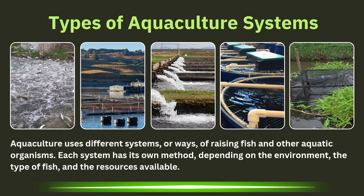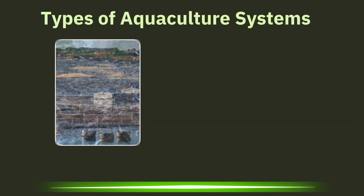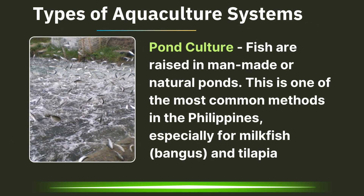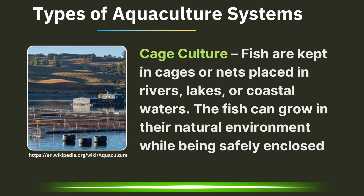The types of aquaculture systems. Aquaculture uses different systems, or ways, of raising fish and other aquatic organisms. Each system has its own method depending on the environment, the type of fish, and the resources available. First is pond culture, where fish are raised in man-made or natural ponds. This is one of the most common methods in the Philippines, especially for milkfish or bangus and tilapia. Next is cage culture, where fish are kept in cages or nets placed in rivers, lakes, or coastal waters. The fish can grow in their natural environment while being safely enclosed.